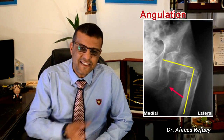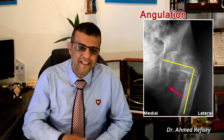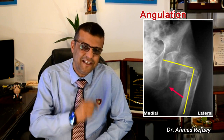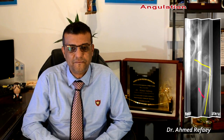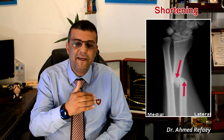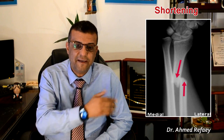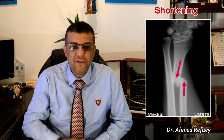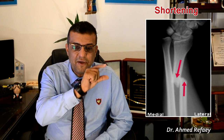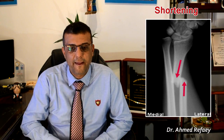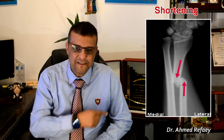Angulation means the angle away from normal that the distal fragment makes with the proximal one. In this case, the distal fragment is angulated medially. Shortening is overlapping of the ends of the fracture fragments, usually described by the number of centimeters of overlap, as seen here. There is also medial displacement shown here.